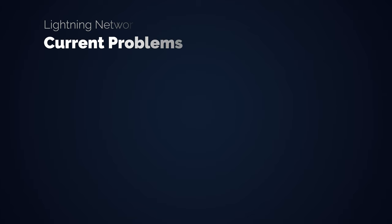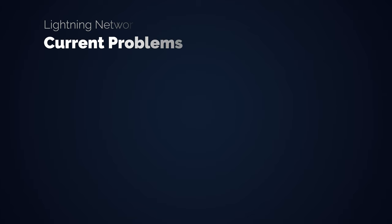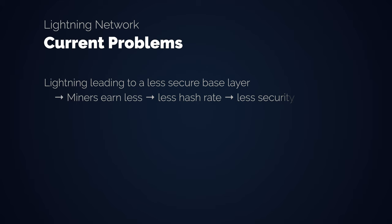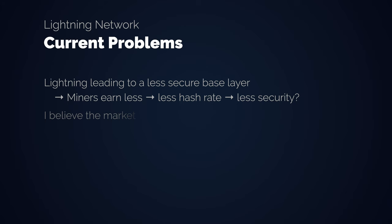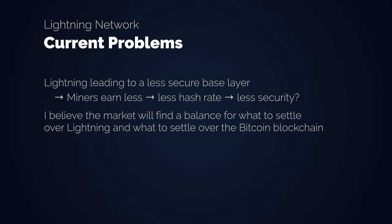While this is against the decentralized nature of Bitcoin and Lightning, it doesn't imply that these hubs control the network. They just offer services, just like Amazon AWS and Google offer services that you can use while you can also run your own server. So the best way to circumvent this fear is running your own node and opening channels. A more speculative take is the potential danger that almost fee-less transactions on the Lightning network lead to weakened security of the base layer, because miners earn less. However, hash rate has gone up because of a rising Bitcoin price, and the market will find a balance of what to settle over Lightning and what to settle over the base layer.